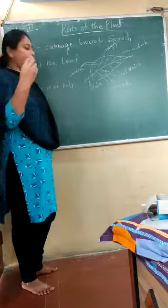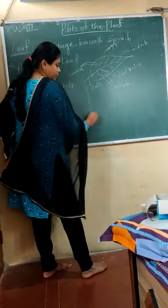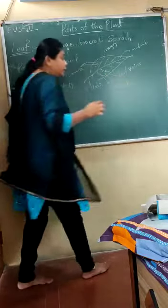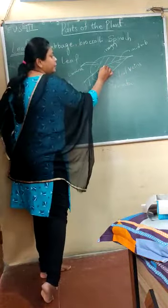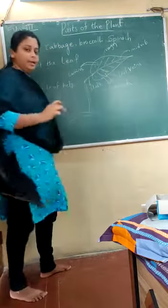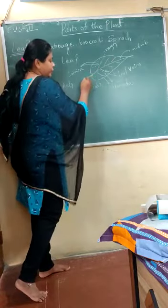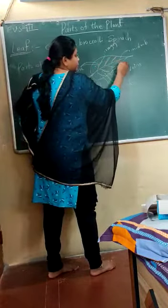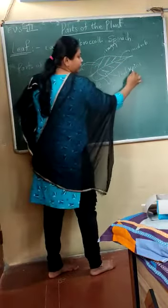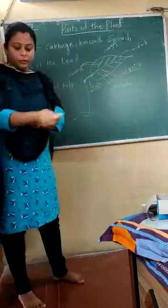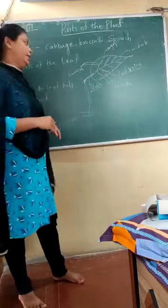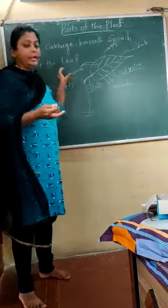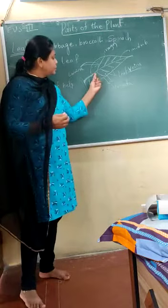Each and every leaf has some particular parts. This middle part running from the stem branch throughout the tip of the leaf is called the midrib. The outside part of the leaf is called the stalk. The small thread-like structures are called leaf veins — just like we have veins in our body, the leaf also has veins. The flat part exposed to sunlight is called the lamina.